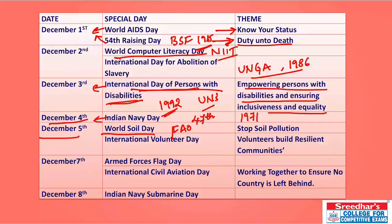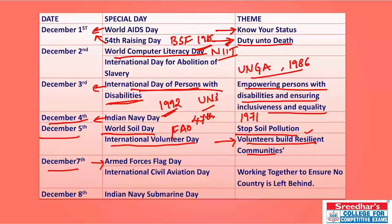International Volunteer Day is also observed on December 5th — the 2018 theme is 'Volunteers Build Resilient Communities,' celebrated by UN agencies and NGOs worldwide. December 7th is observed as Armed Forces Flag Day throughout India, celebrated to honor martyrs and men and women in uniform. December 7th is also International Civil Aviation Day — the 2018 theme is 'Working Together to Ensure No Country Left Behind.'